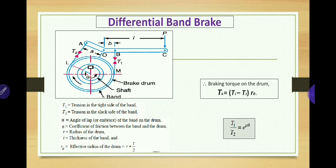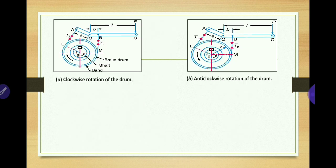In this formula, T1 and T2 are the unknowns. You can find them using two relations: T1 divided by T2 equals e raised to mu theta, and another relation obtained by taking moments at the fulcrum point O. While taking the moment, you must take care of the notations of T1 and T2 — that is, which is the tight side and which is the slack side.